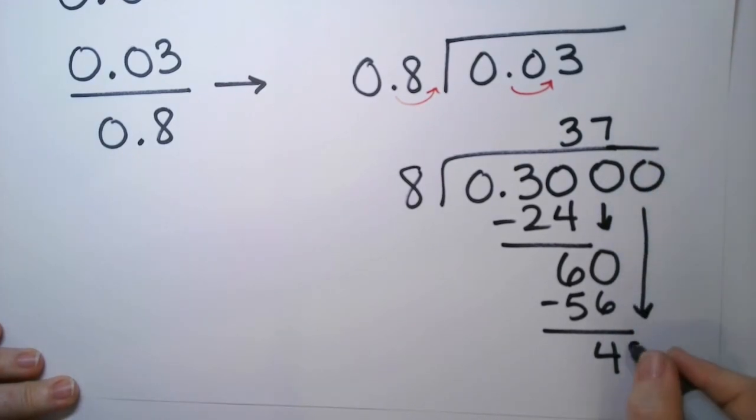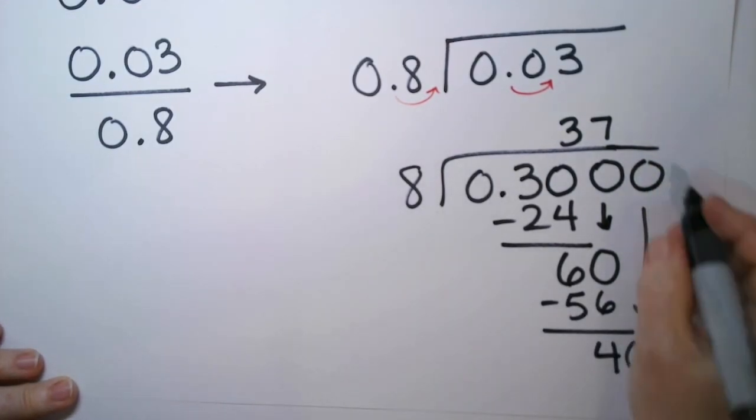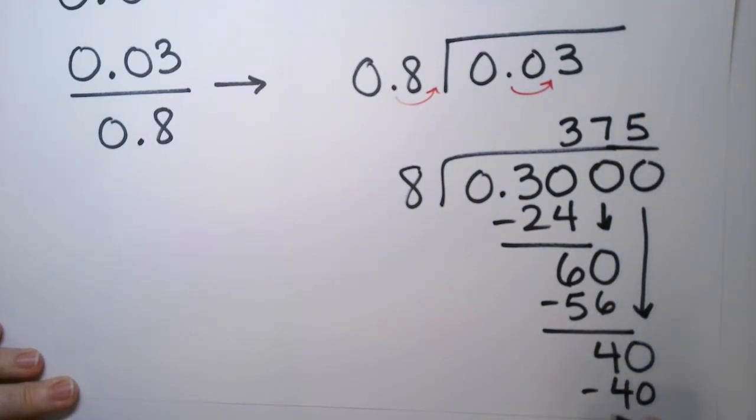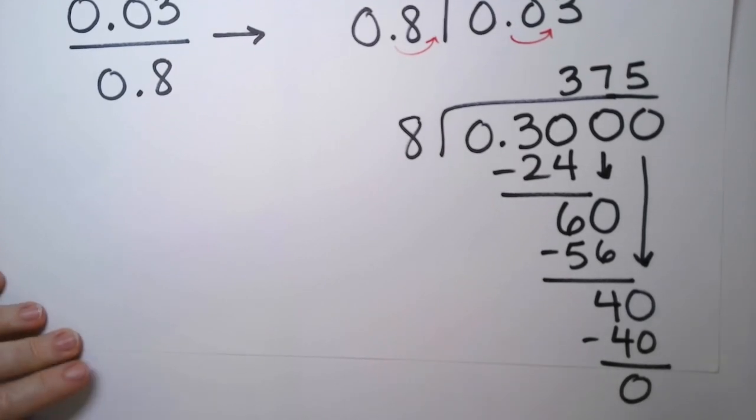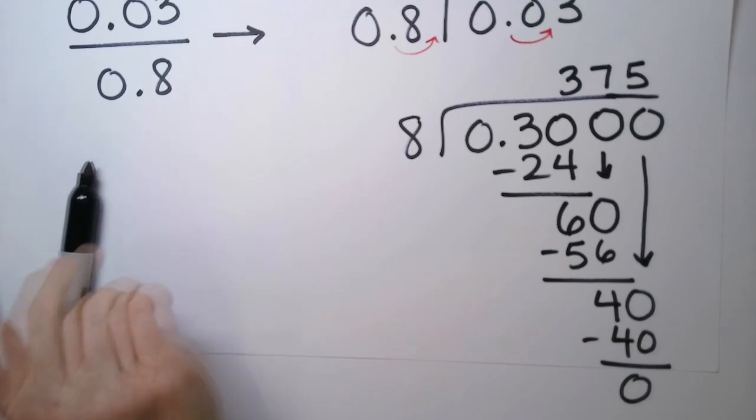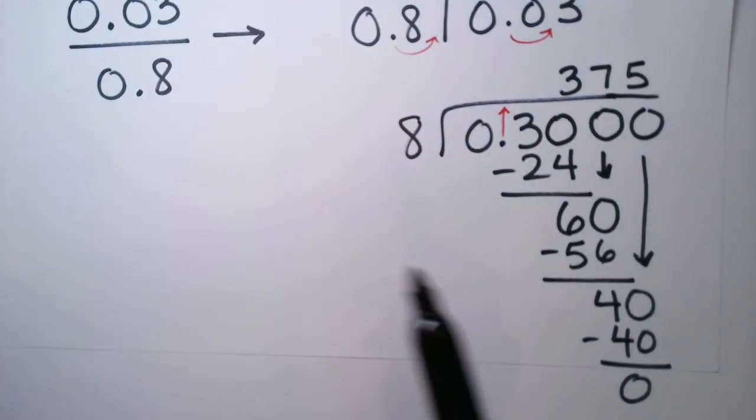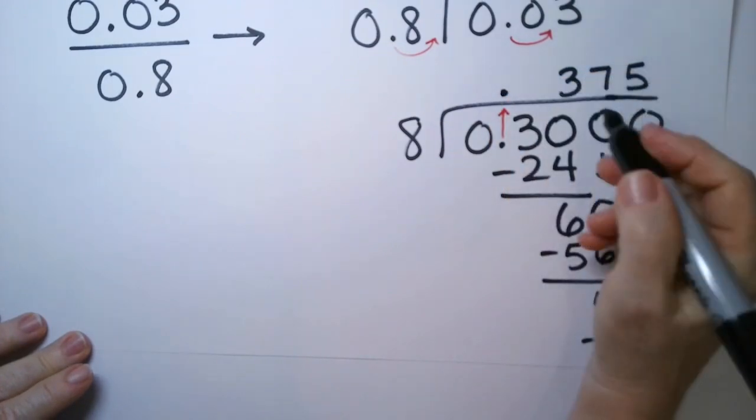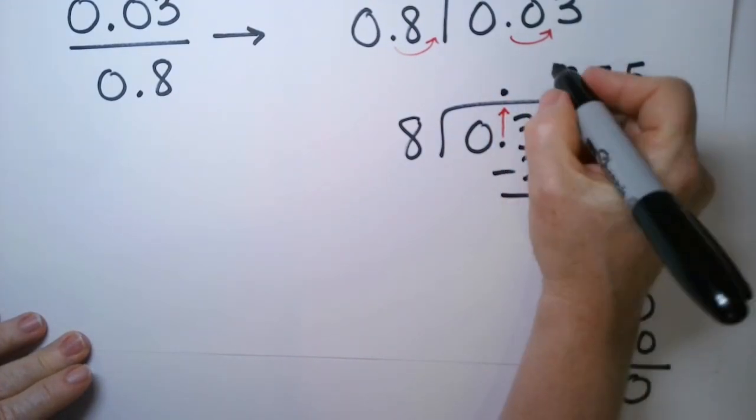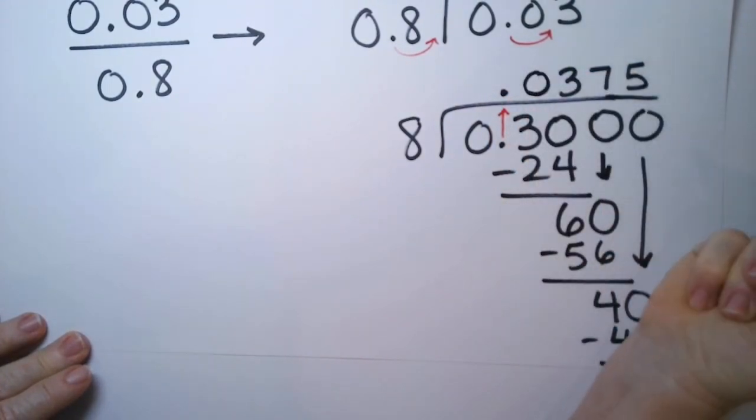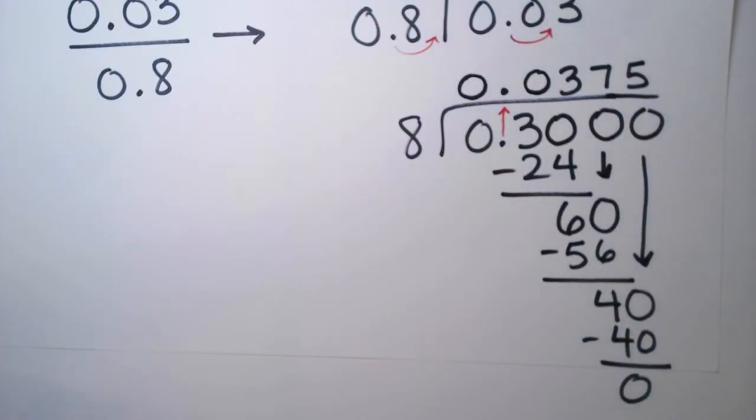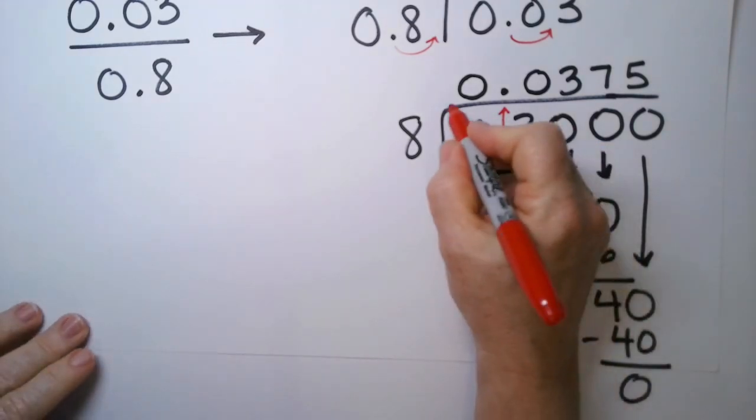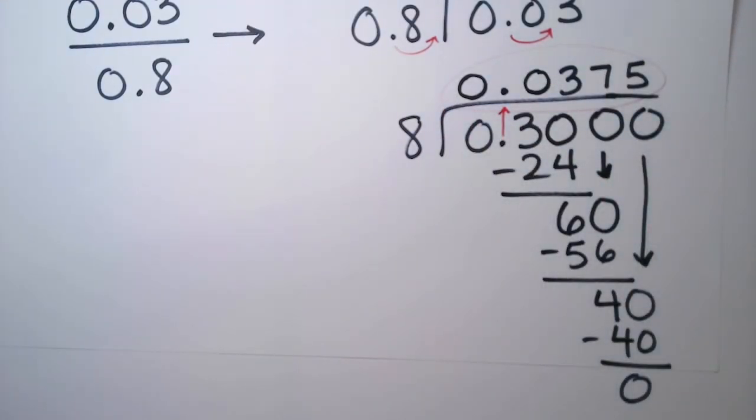Drop this one down. 8 goes into 40 perfectly, doesn't it? 5 times. And there's no remainder left over. So where's the decimal point in this number? It's always right above. So I'm going to put it right there. Notice there's a number here but nothing here. So I have to put a placeholder 0 in. And I like to put a number in front of the 0's too. It's obvious that there's a dot there. So my answer is 0.0375.